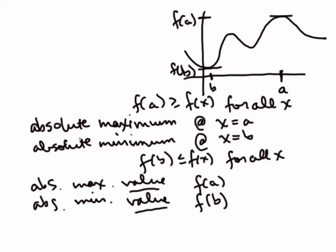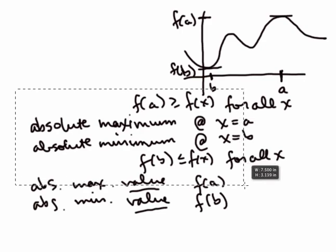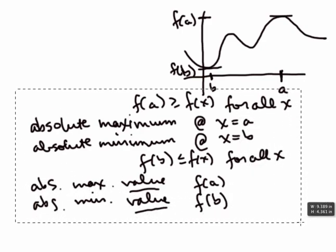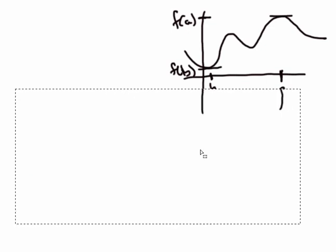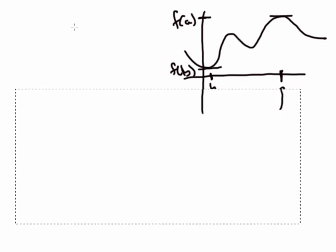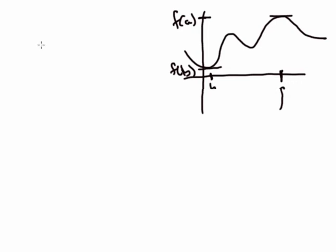If they just say absolute maximum or absolute minimum, we're talking about an x value. So that's our definition for what's going on in an absolute sense.